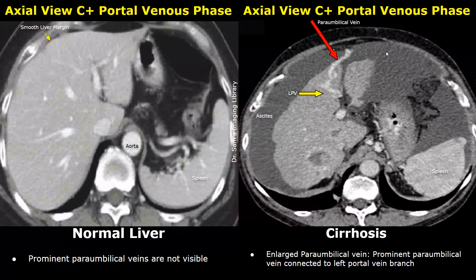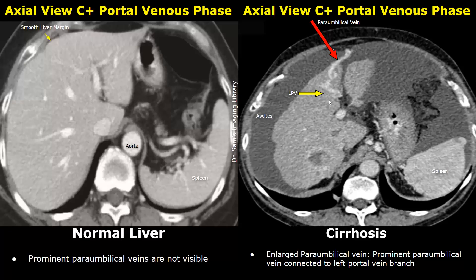An enlarged paraumbilical vein can also be present in cases of cirrhosis. The normal paraumbilical veins are not really visible on a CT scan, but when enlarged they appear as prominent vessels anterior to the liver, somewhat near the umbilicus. In this image, the paraumbilical vein is seen connected to the left portal vein branch. The liver has irregular margins, a reduced size, and there is presence of ascites.